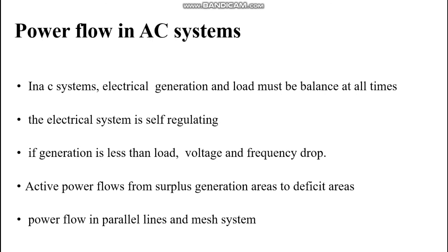In an AC system, electrical generation and load must be balanced at all times — generating capacity should meet the required power demand, otherwise losses increase. The electrical system is self-regulating to some extent by using automatic voltage regulators, stabilizers, and DVRs. If generation is less than load, voltage and frequency drop, affecting plant capacity and causing the overall transmission system to collapse. Active power flows from surplus generation areas to deficit areas. In AC systems, due to the skin effect, there are more losses, so HVDC is better but more costly, which is why FACTS devices are used in AC transmission systems.